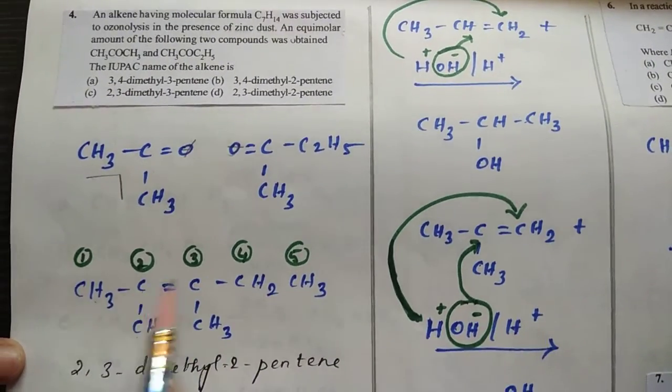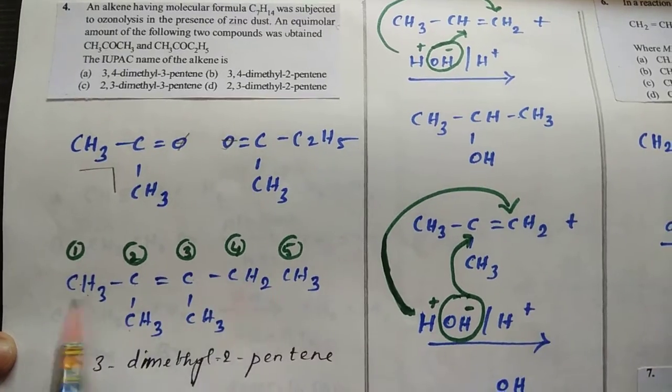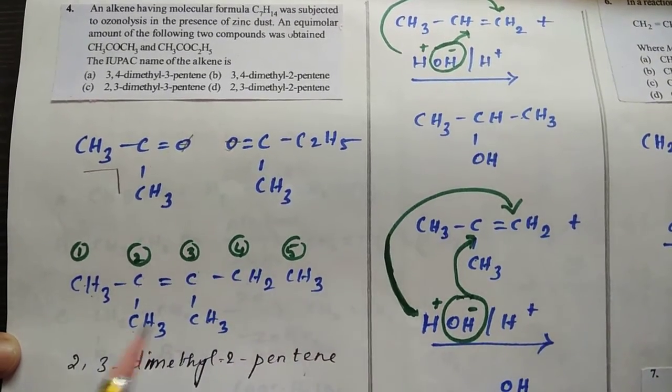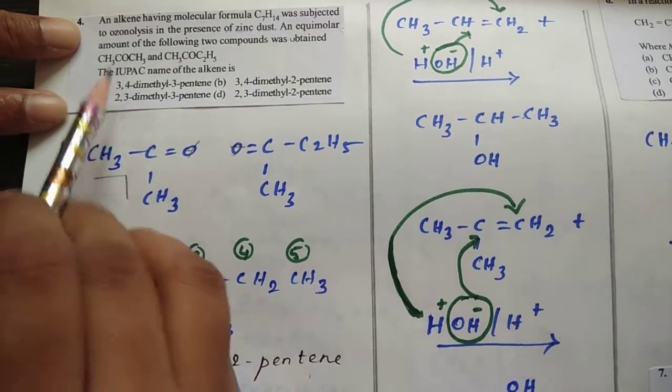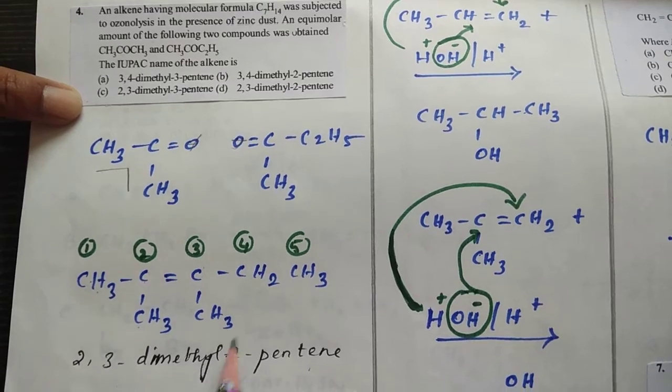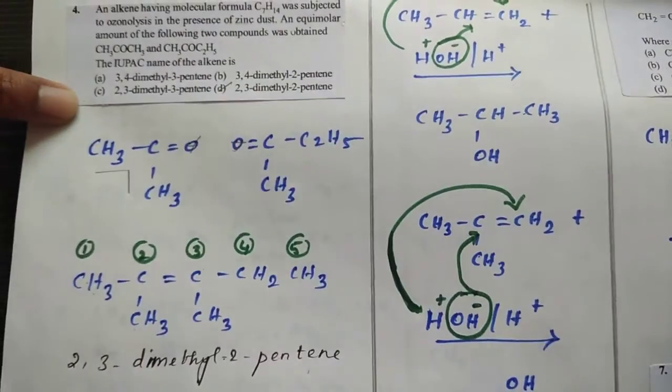So here you have to name the compound: 1, 2, 3, 4, 5-pentene. 2,3-dimethyl-2-pentene is your alkene which undergoes ozonolysis to give these required products. So your answer is 2,3-dimethyl-2-pentene, option D is your answer.